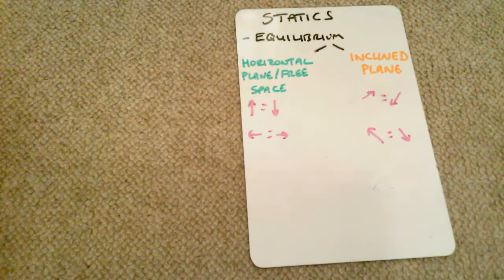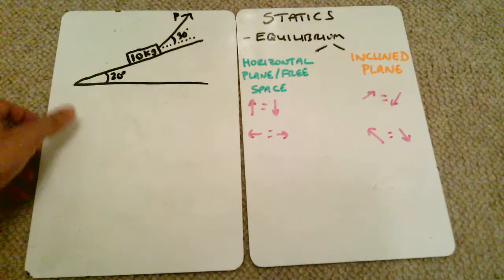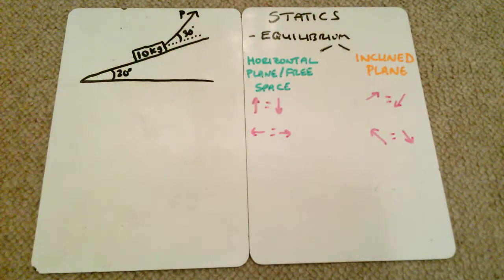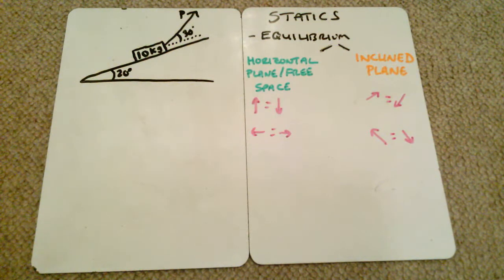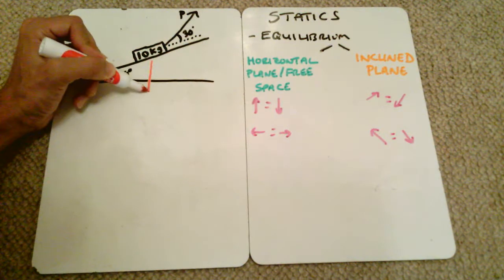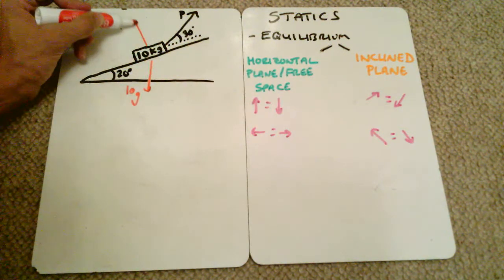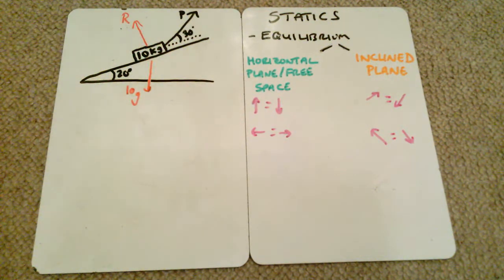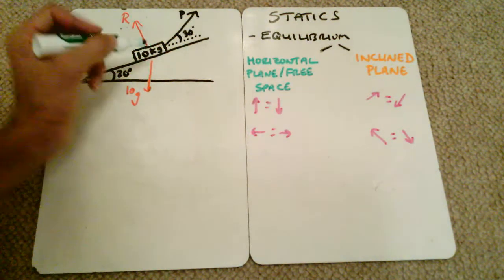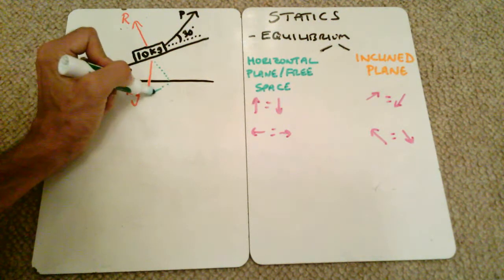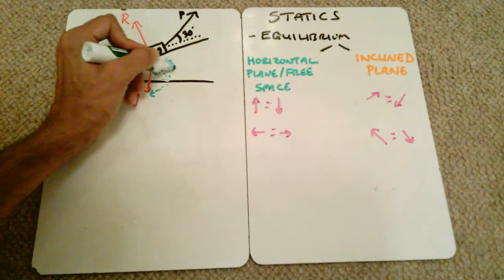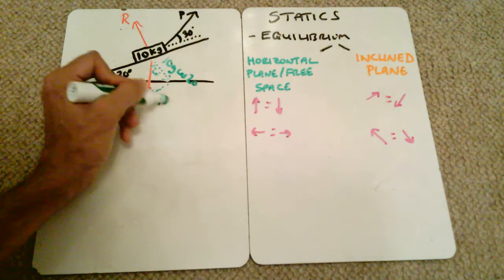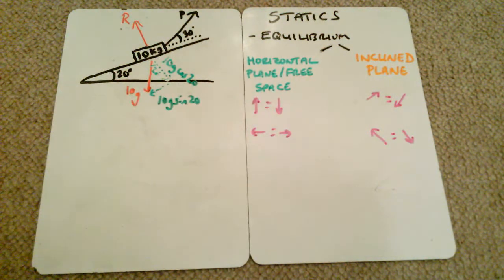We have a 10 kilogram particle held by a force P at an angle of 30 degrees to the plane, where the plane itself is at 20 degrees. On inclined planes we look at forces parallel and perpendicular to the slope. The particle has weight 10g downward and a reaction force R perpendicular to the slope. We resolve 10g into components: parallel to the slope is 10g sin 20, and perpendicular to the slope is 10g cos 20.